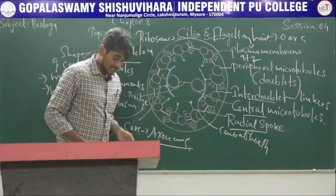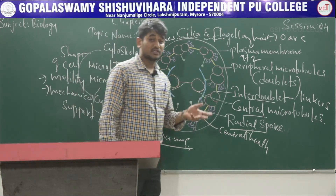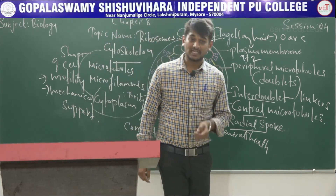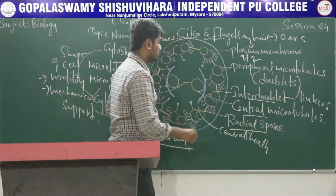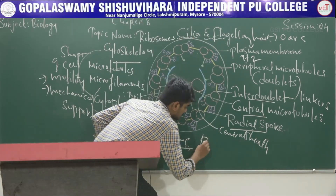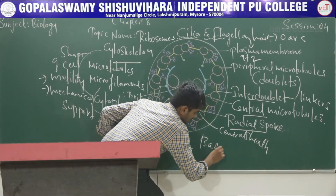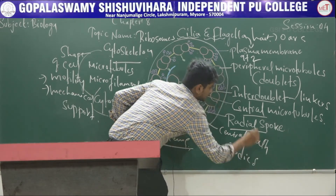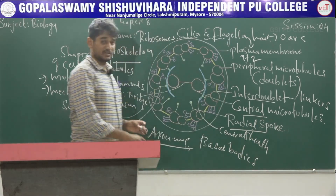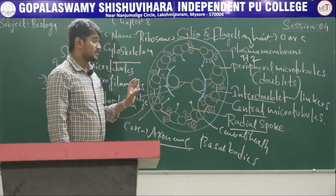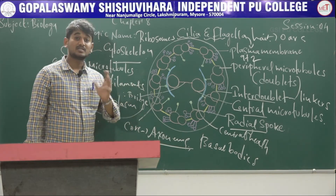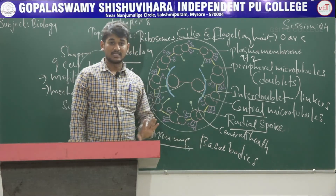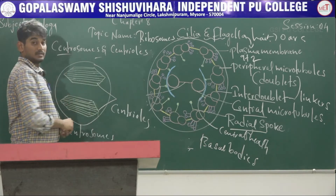The cilia and flagellum emerge from a centriole-like structure called basal bodies.